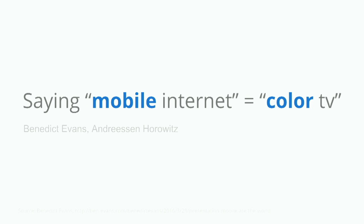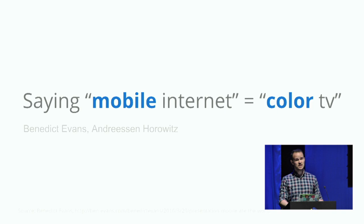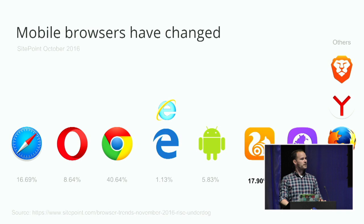I want to quote Benedict Evans here: saying 'mobile internet' is the same as saying 'color TV.' It's kind of implied when you watch TV today that it's in color. And when you go online today, it's kind of implied that you do it from your mobile phone or a wearable. This mobile thing is just the way we do things. The mobile landscape has also changed quite a bit.